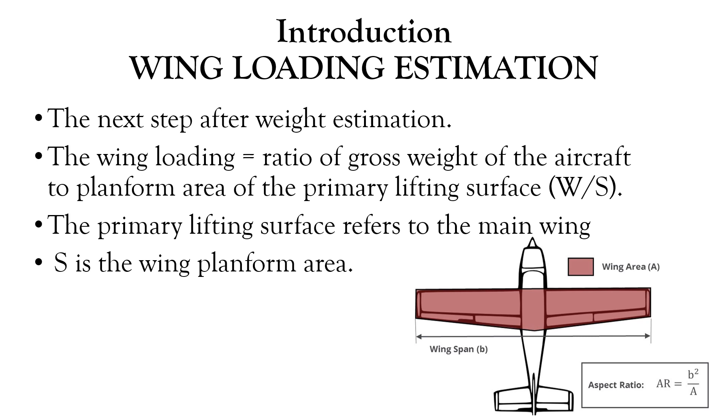Introduction to Wing Loading Estimation. Once the weight estimation for the conceptual aircraft is complete for each phase of the flight plan, the next step in the design is selection of wing loading. Wing loading is defined as the ratio of gross weight of the aircraft to the planform area of the primary lifting surface which is represented as W by S. In most designs, the primary lifting surface is the main wing and S is the wing planform area.